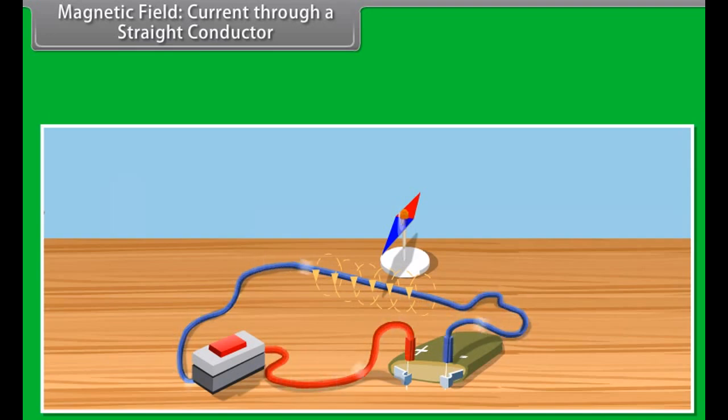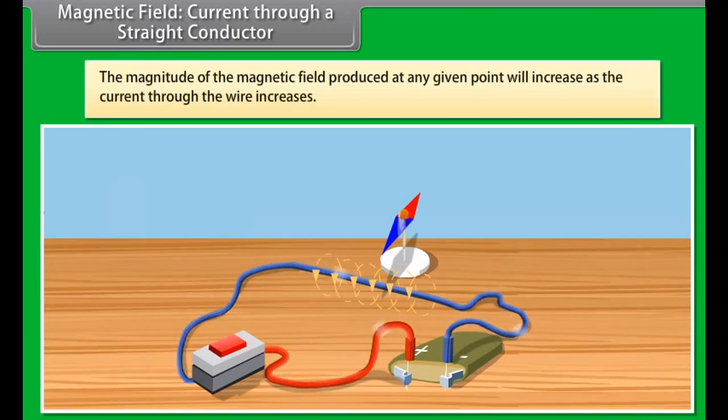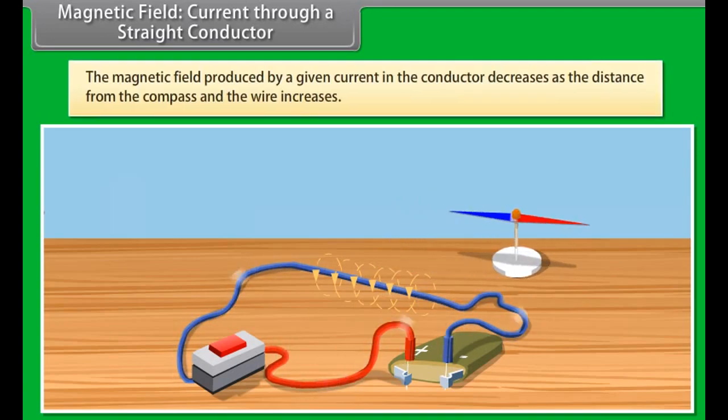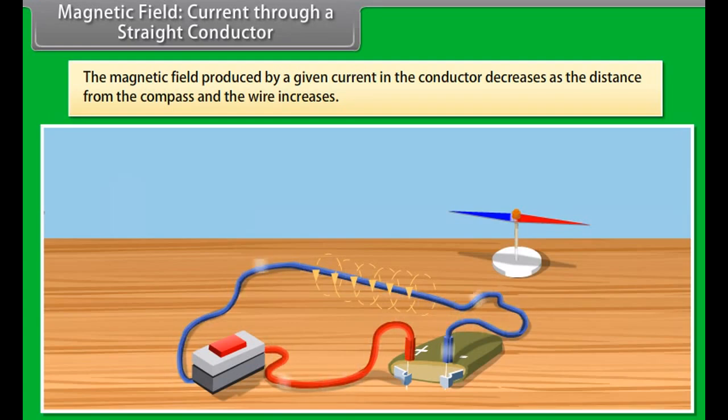From this we know that the magnitude of the magnetic field produced at any given point will increase as the current through the wire increases. Now, try moving the compass away from the current passing through the wire. You will see that the magnetic field produced by a given current in the conductor decreases as the distance from the compass and the wire increases.